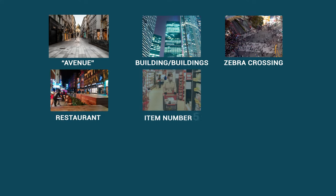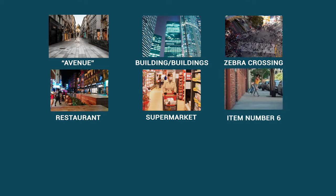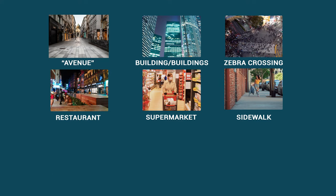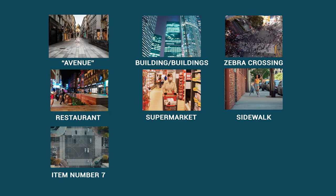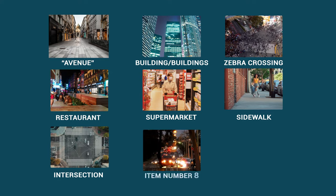Item number five: supermarket. Item number six: sidewalk. Item number seven: intersection. Item number eight: street light.